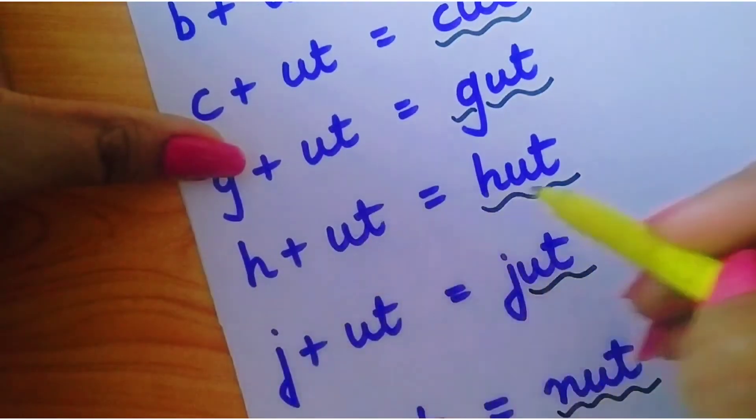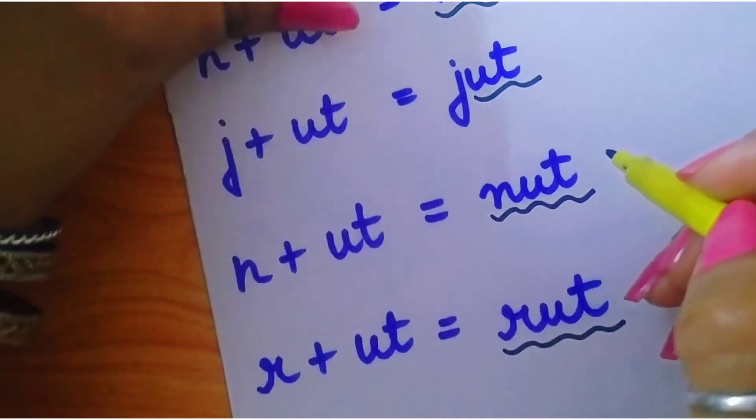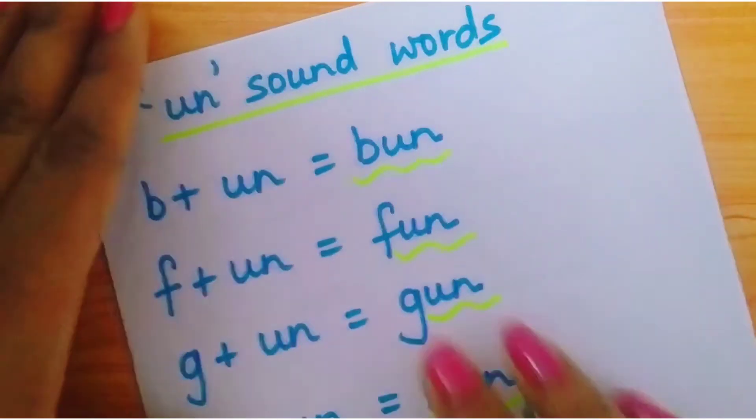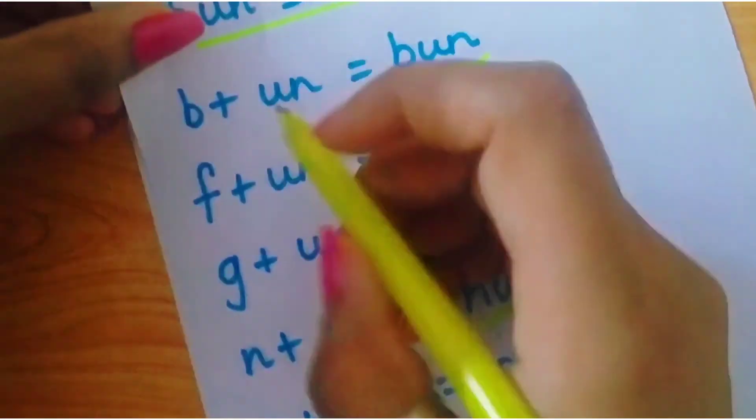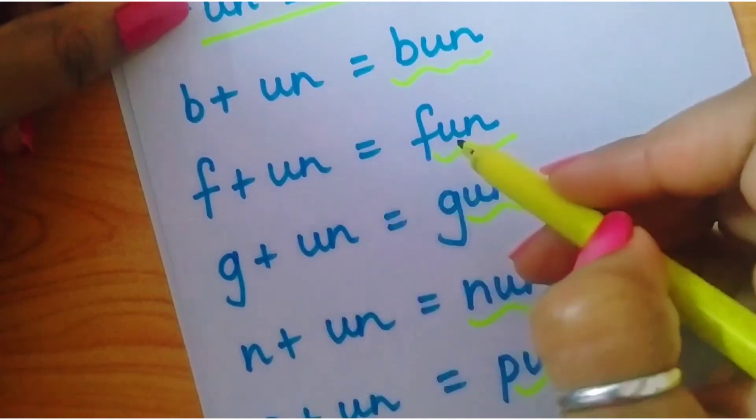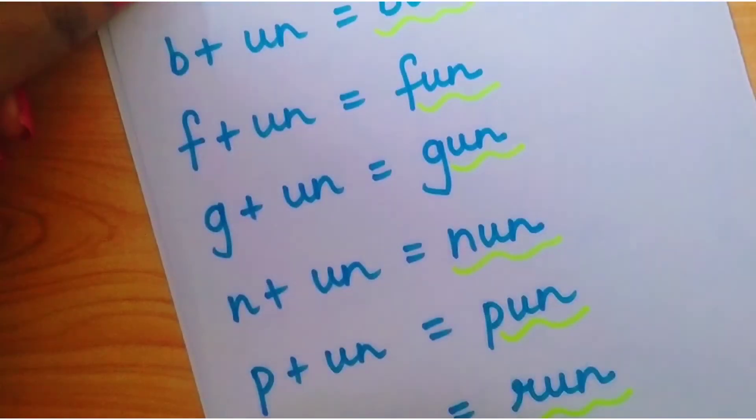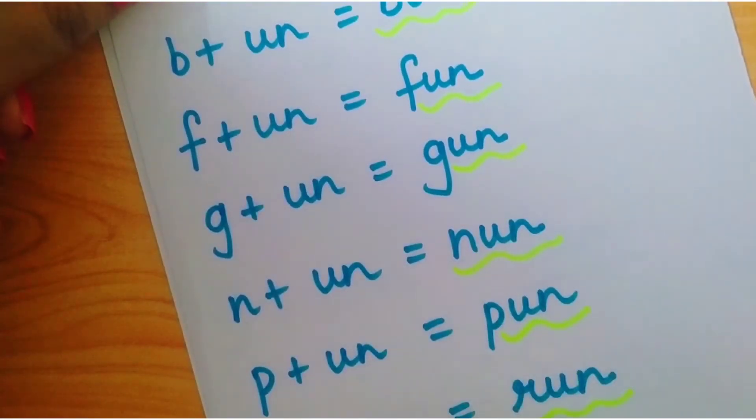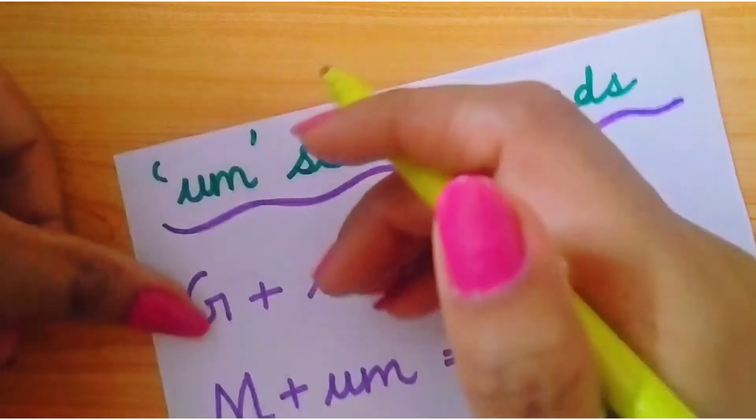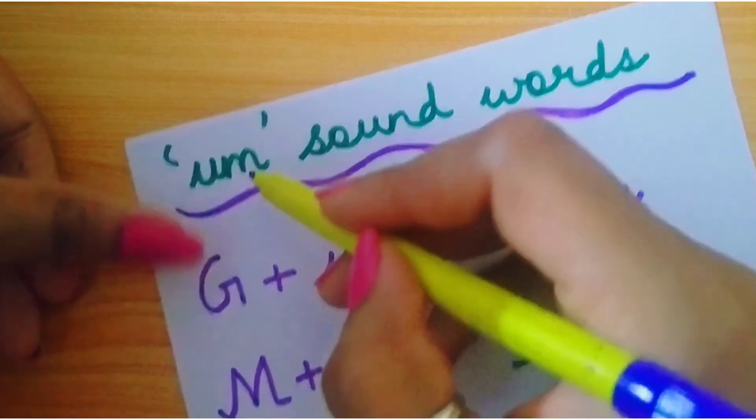See the next sound un sound words. b-un-bun, f-un-fun, g-un-gun, n-un-nun, p-un-pun, r-un-run. See the next one.